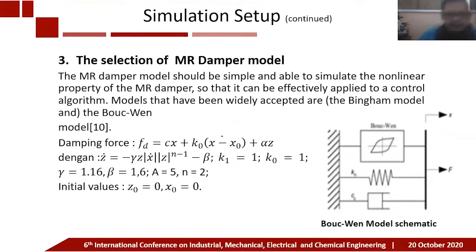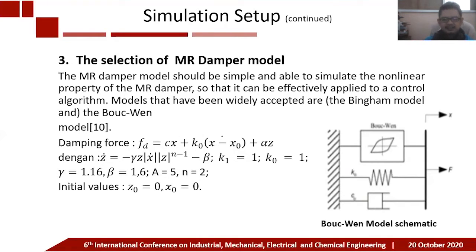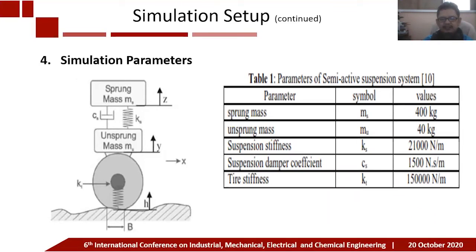To design the MR damper, I select a Bouc-Wen model. The model calculates the damping force using an intermediate variable z. We determine the derivative of z, dot-z, as shown in the slide. The simulation parameters show the values of the components of the quarter-car model for the suspension system.